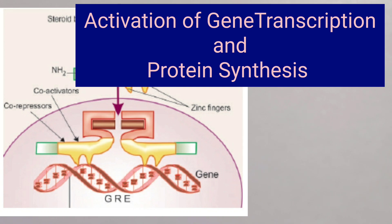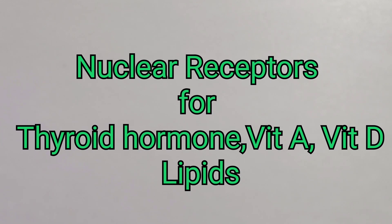Once inside the nucleus, the homodimer complex may transactivate or transrepress genes by binding to the positive or negative glucocorticoid response elements, giving rise to gene transcription and protein synthesis. The other category of nuclear receptors includes receptors for thyroid hormone, receptors for vitamin A and D, and the peroxisome proliferator-activated receptor (PPAR), which acts as the lipid sensor and modulates lipid metabolism within the cell.